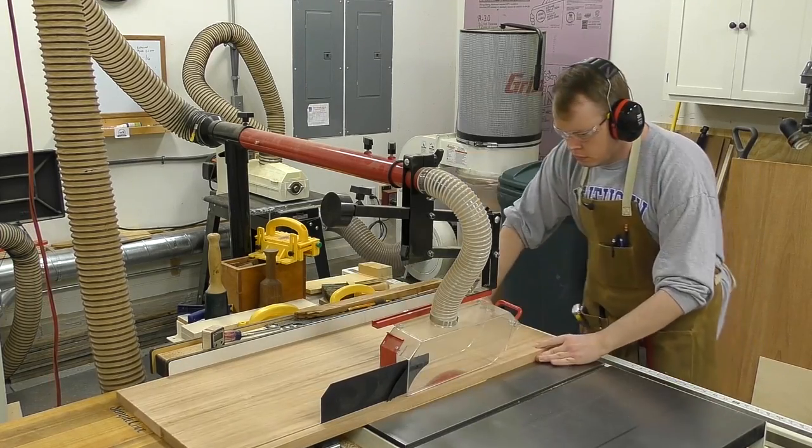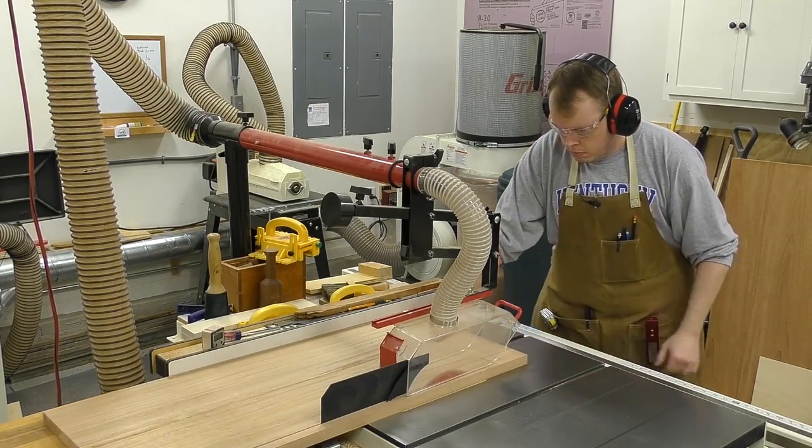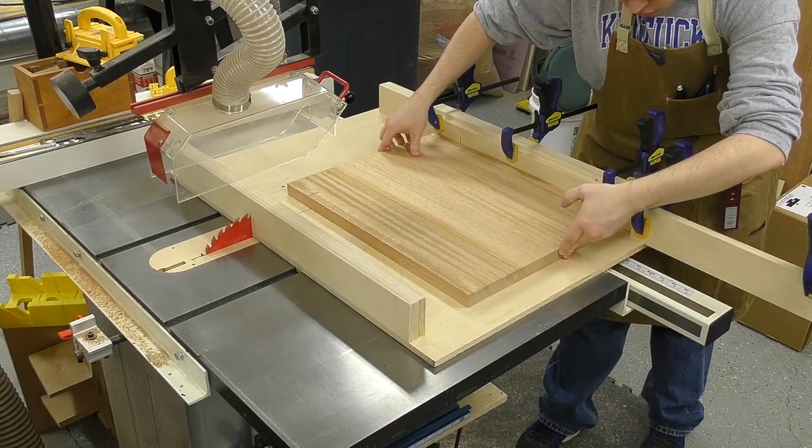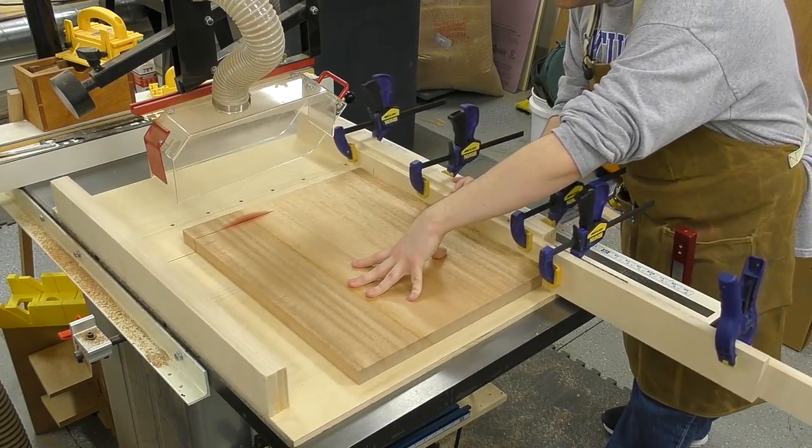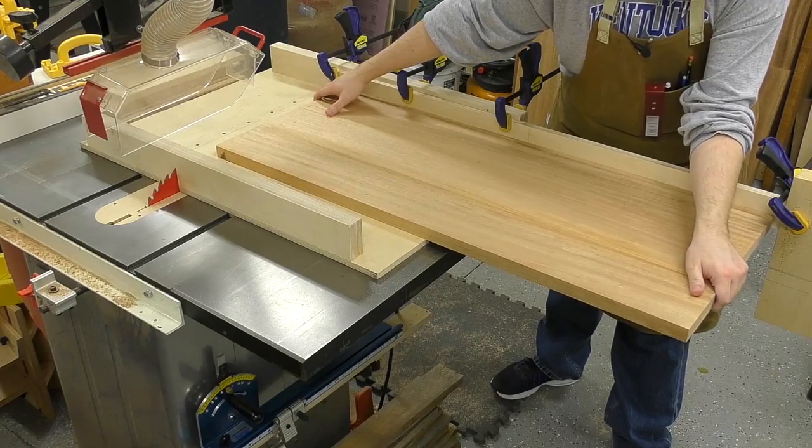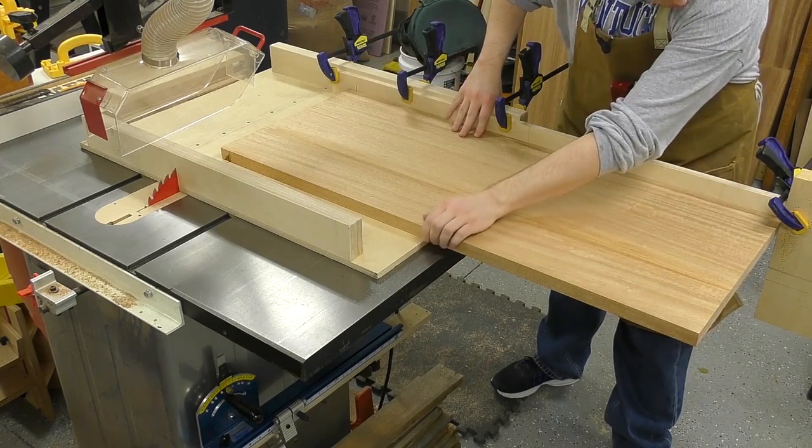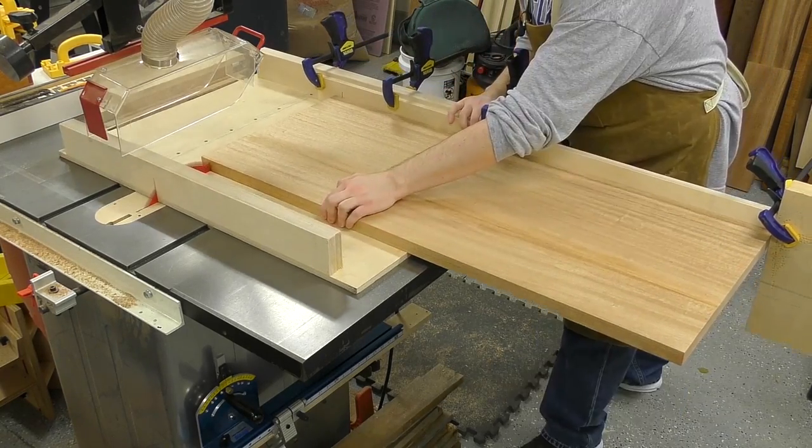And after the glue dried, I used the table saw to cut the panels to their final width. For the length, I used a cross cut sled and a stop block to make sure that the side pieces are the same exact length. And for the front and back panels, I just readjust the stop block and then cut those to length as well.